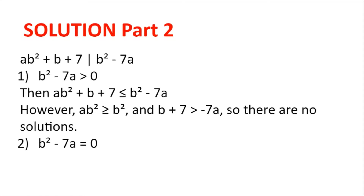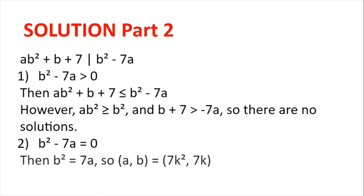For the second case, where b² − 7a = 0: whatever the value of ab² + b + 7 is, it will always divide 0. So we just need b² = 7a, which gives us (a, b) = (7k², 7k) for some positive integer k.